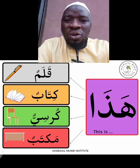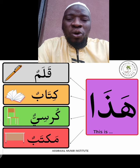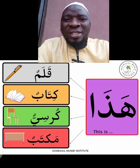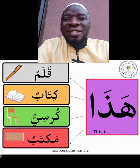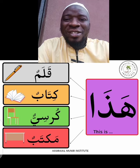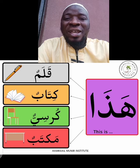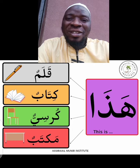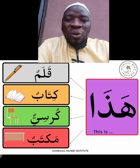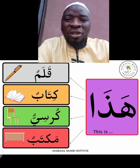Likewise, you can replace them with dhamair — with pronouns. For instance, you can say hadha ana, meaning 'this is me.' Then you say hadha huwa, meaning 'this is it' or 'this is he.' Then you can say hadha kitabi, meaning 'this is my book.' So this is a very short lesson that is going to teach you Arabic.